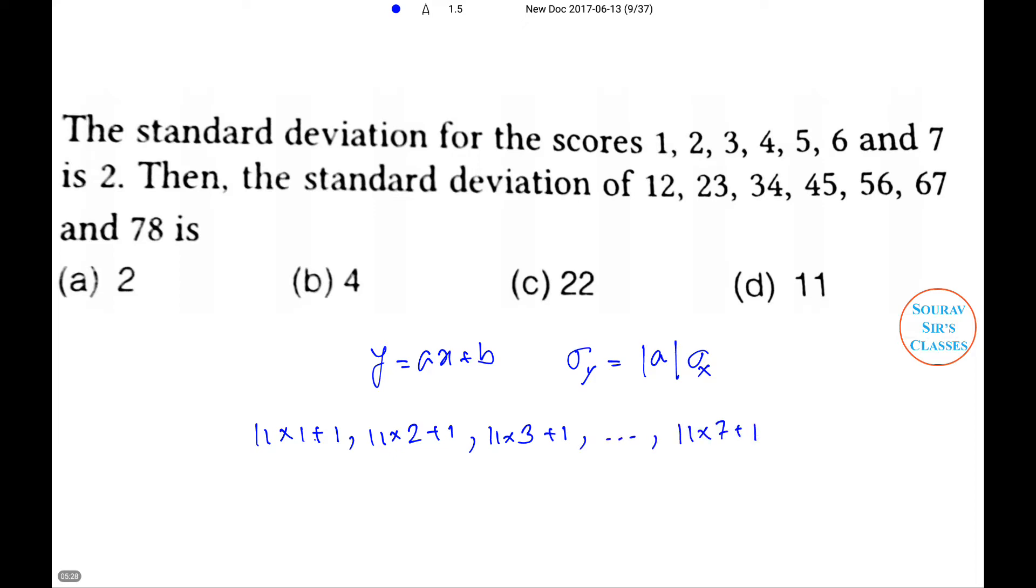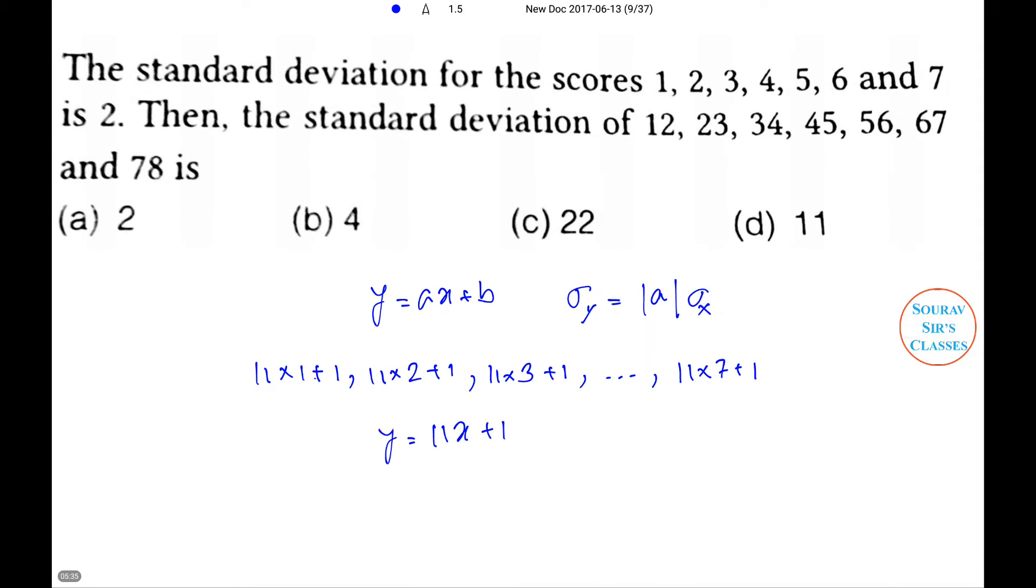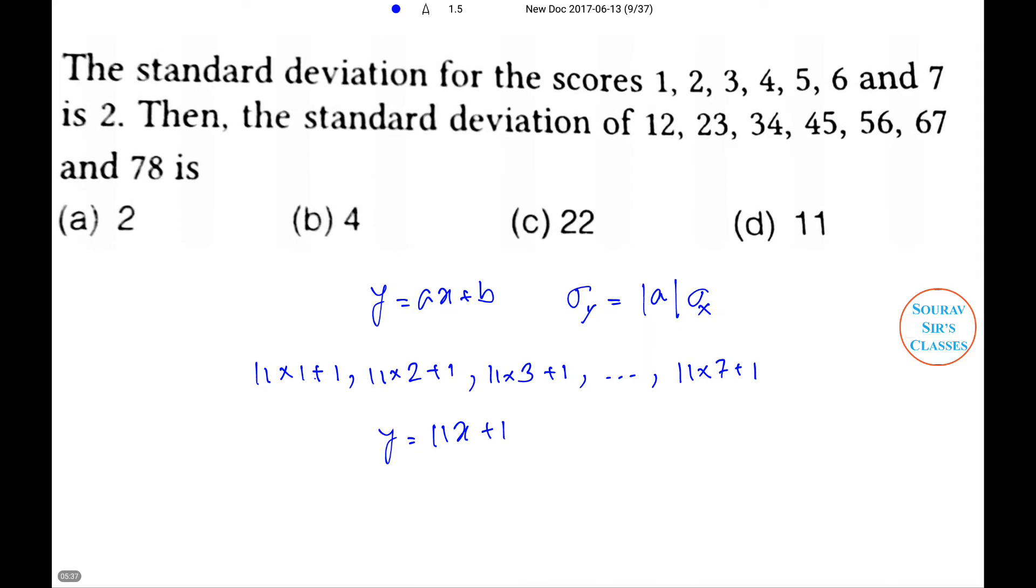That is y equals 11x plus 1, where x denotes the observations 1, 2, 3, 4, 5, 6, 7, and y denotes the other observations. That means sigma y equals 11 sigma x, so that implies 11 times 2 equals 22. So the right option is option C.